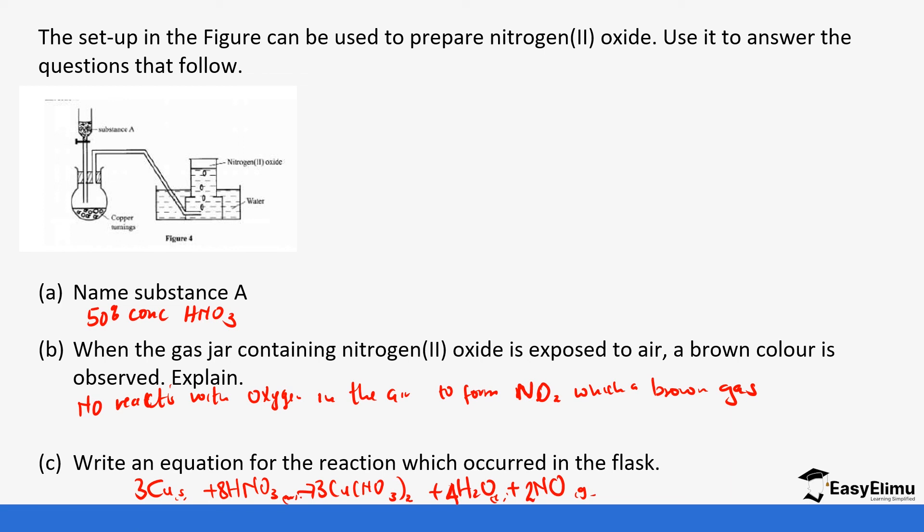That brings us to the end of nitrogen (II) oxide. You can see it's an easy oxide to unpack. If there's a part that you didn't understand, make sure you go back and check it out. For the next lesson we are going to be looking at nitrogen (IV) oxide, the last oxide of nitrogen, and then we will dive deep into the other compounds of this topic. See you in the next lesson.